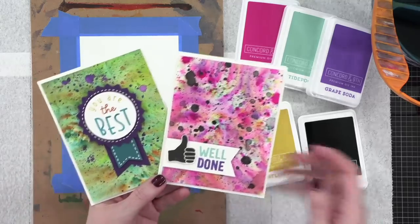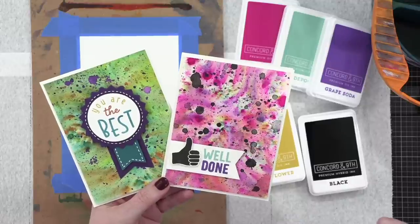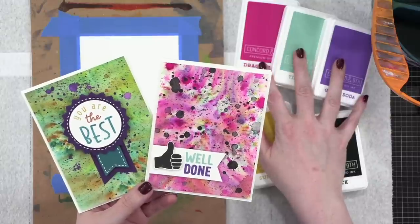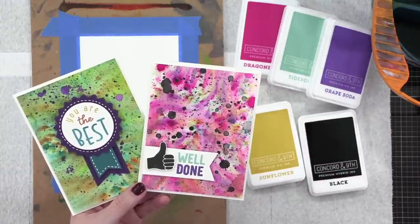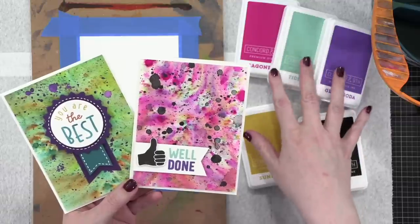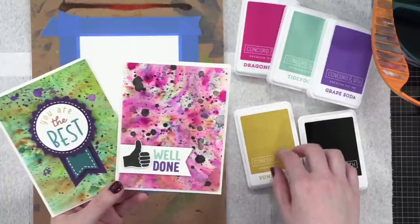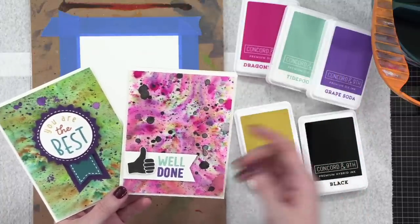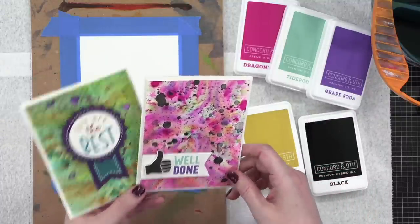So here we are. I'm going to focus on just this one technique. I don't even know what to call it. After you guys see it, then we can maybe figure out a name for it. I'm using Concord and 9th inks for this. I believe the Simon Says Stamp positively saturated inks are of a similar formulation. So you could use the Simon inks for this as well. But since I was using Concord and 9th inks, I'm going to stick with that. So let's get into it.